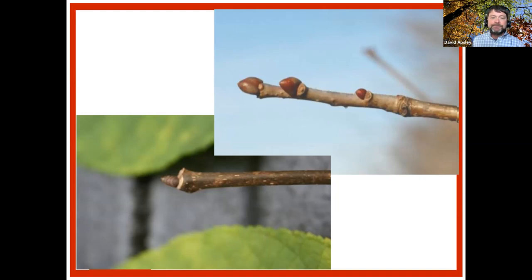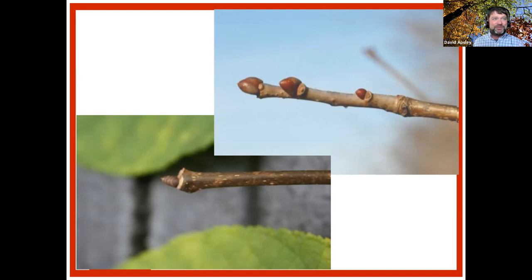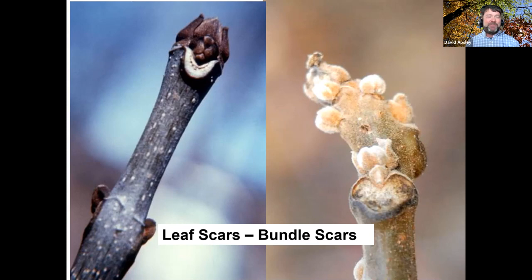Good clear photos sent for identification can be helpful. The leaf scar is where the base of the leaf petiole was attached; within it are bundle scars — the remnants of the vascular bundles (piping network) connecting the twig to the leaf. The arrangement, shape of the leaf scar, and the pattern of bundle scars within it are important ID characteristics.